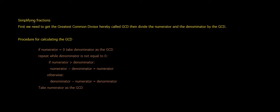Simplifying fractions. First, we need to get the greatest common divisor, hereby called GCD, then divide the numerator and the denominator by the GCD.